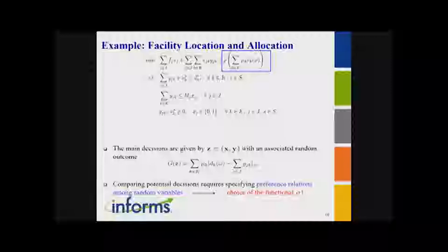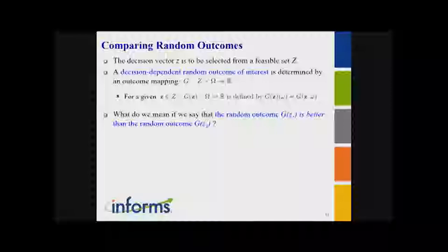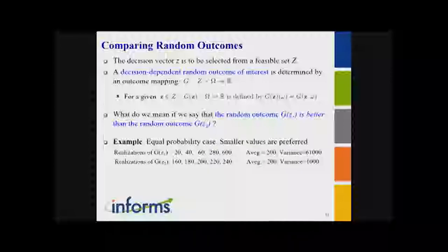To compare decisions, I need to compare random variables. I need to specify my mapping so that I can pick what I claim is better. I have the decision vector selected from a feasible set Z. The important question: what do we mean when we say the random outcome associated with one decision is better than that of another? Let's suppose smaller values are preferred. If you have only five possible outcomes and try to compare them, it's not clear how to rank these random variables.